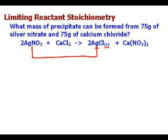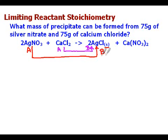If at any point you need a little extra time, go ahead and pause this and then we'll continue on. In this problem we also have 75 grams of calcium chloride. We are going to convert from calcium chloride to the same product, the AgCl. So we convert from mass to moles, mole ratio to moles of AgCl and then back to mass of AgCl. That's stoichiometry. So we're going to do this stoichiometry twice: first with the AgNO3 going to AgCl, and the second time from CaCl2 to AgCl.